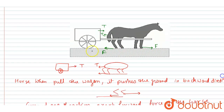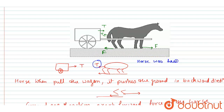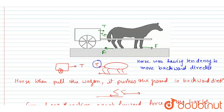Now, what is this force F? The horse was initially acted on by force T in the backward direction, giving it a tendency to move in the backward direction because of the tension force from the wagon. Due to this tendency of relative motion, this force F will be the friction force.